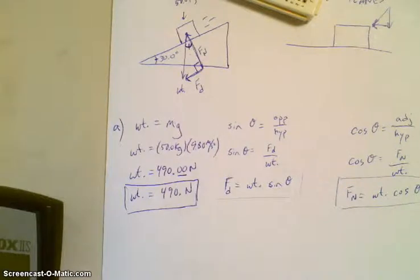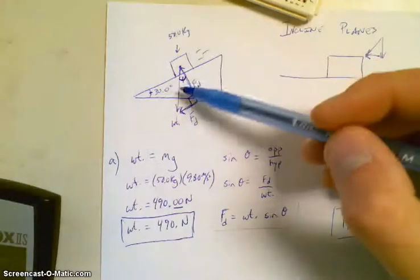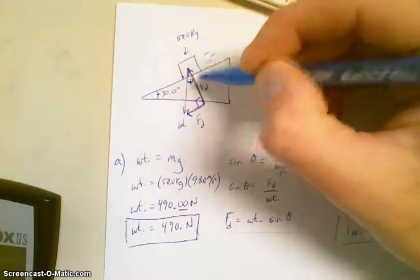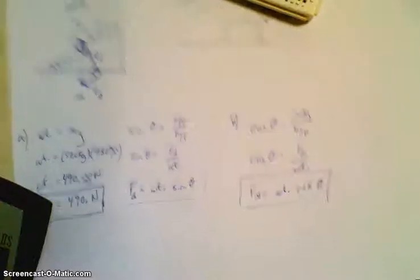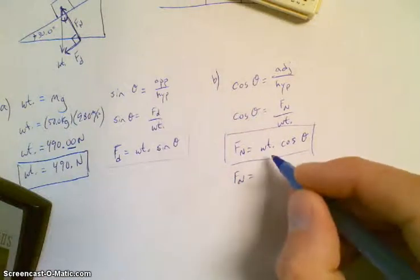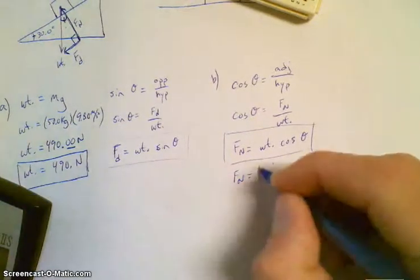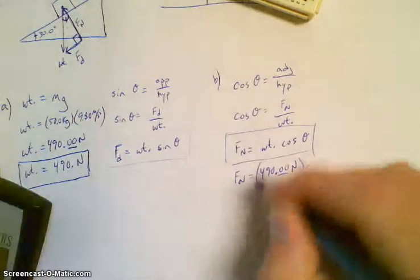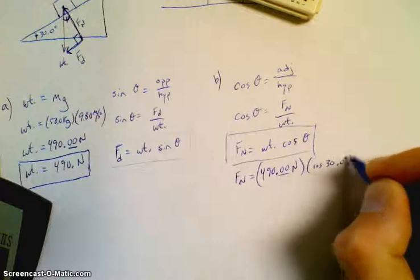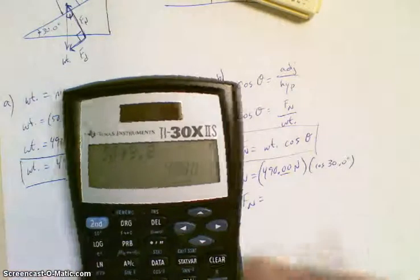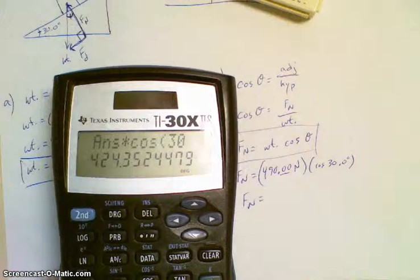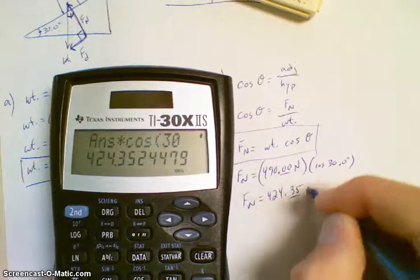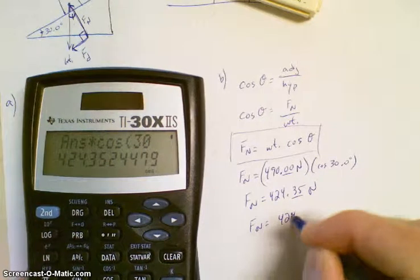All right, let's go to B. Calculate the normal force and locate this force on the diagram. We've already located it. It's the force that's going to be pushing up on the box, which is the reaction to the box pushing down on the surface. And we've said it's this right here. So this is part B on our sheet. So let's plug it in. What's the weight? It's right from here. 490.00 newtons times cosine of 30.0 degrees. Make sure you're in degree mode if you have a graphing calculator. I get 424.35 newtons. So when I report that, 424 newtons.